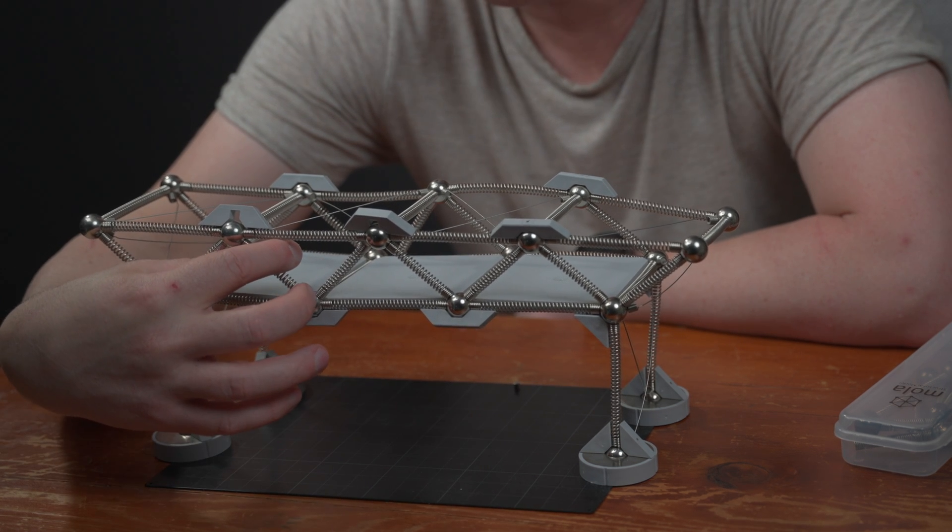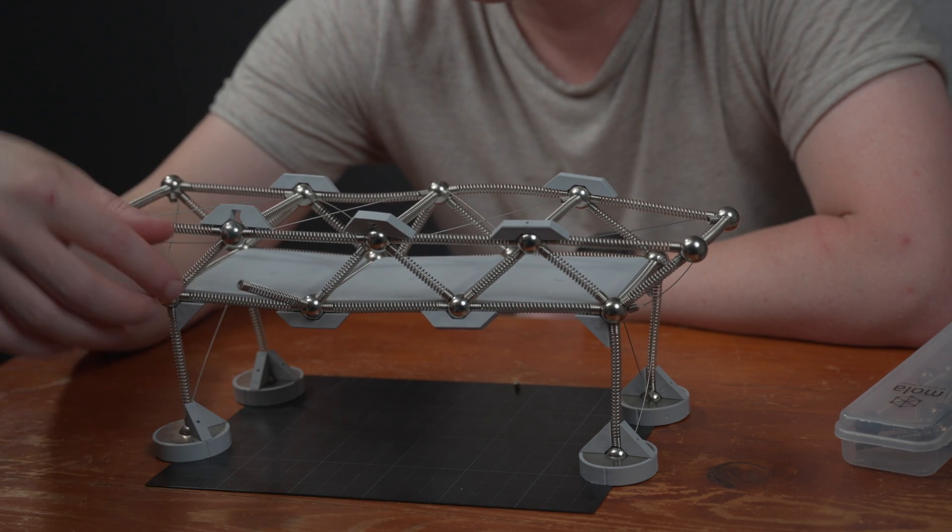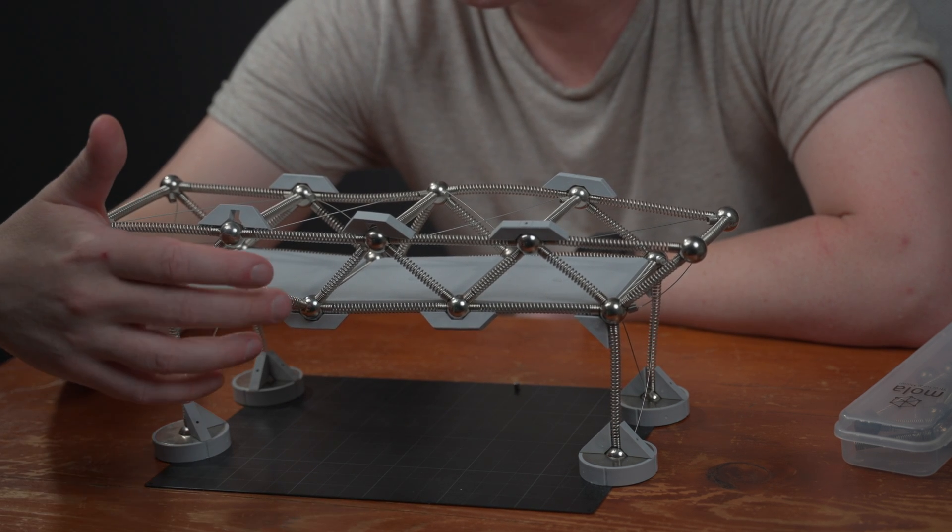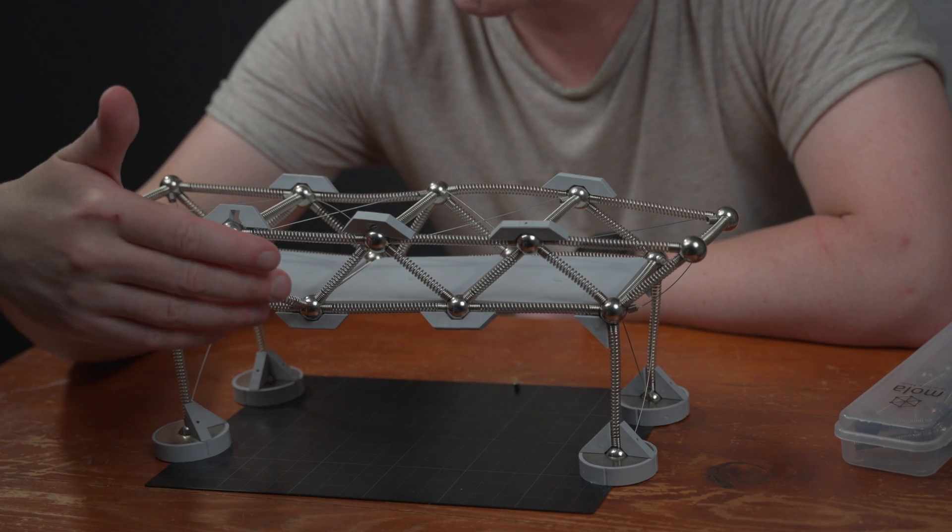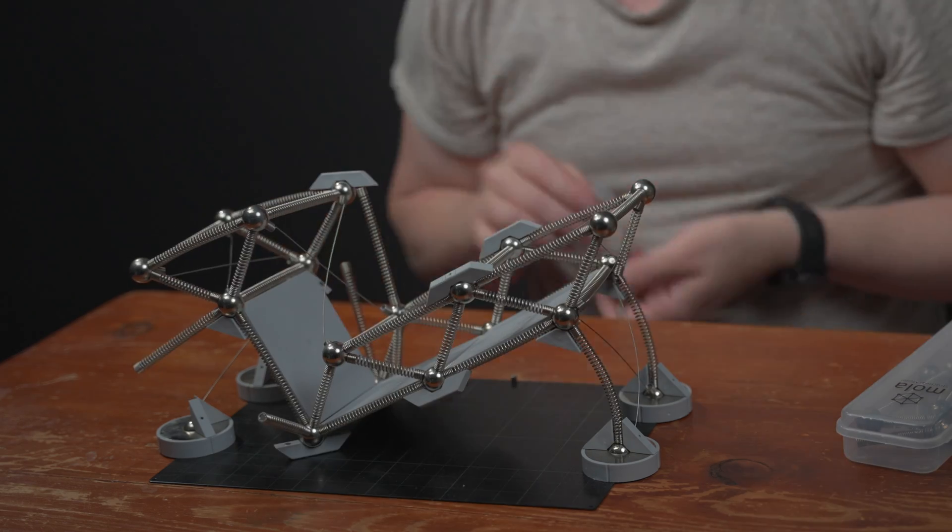Let's see if we can take out another one without a catastrophic failure. Again this one we can see it drop down, probably a little bit more critical, but it doesn't have that catastrophic failure. See how much we can remove before we have that catastrophic failure.